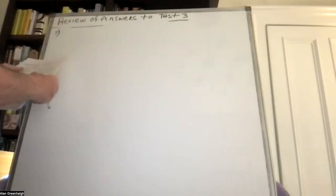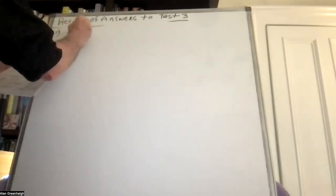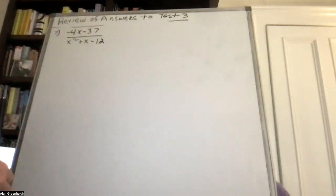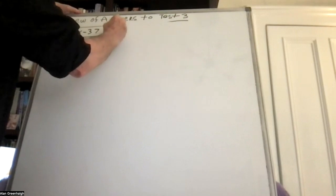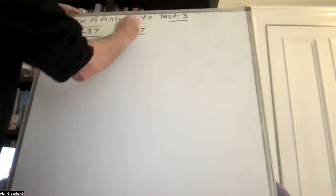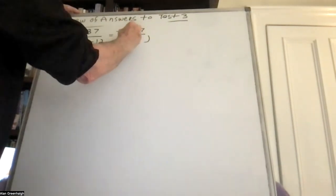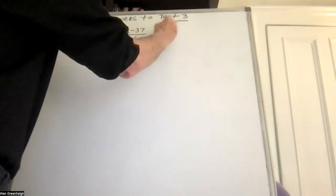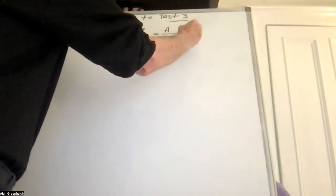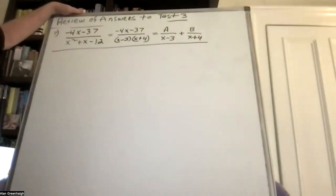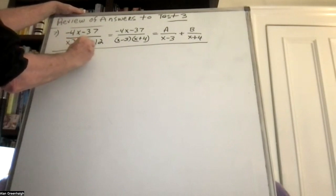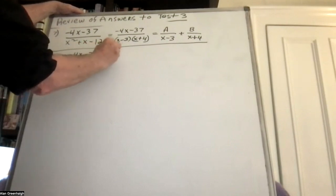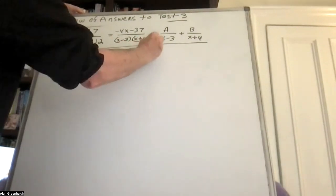Problem number 7 was a partial fraction decomposition. These are all done the same way, and this is on the final exam. The first thing you do is factor the denominator, then indicate what the two partial fractions will be using A and B as we usually do. Then you go down and find what A and B are equal to.